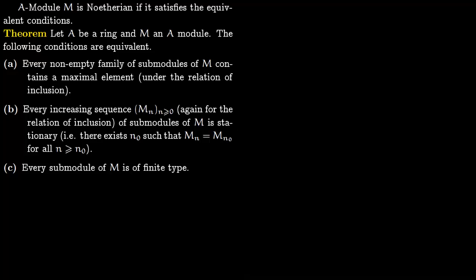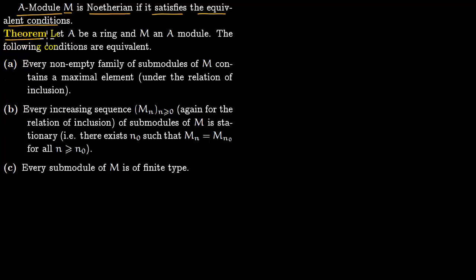In this lecture we talk about Noetherian modules. An A-module M is Noetherian if it satisfies any of the following equivalent conditions — all three are equivalent to each other. Let A be a ring and M be an A-module; then the following conditions are equivalent.